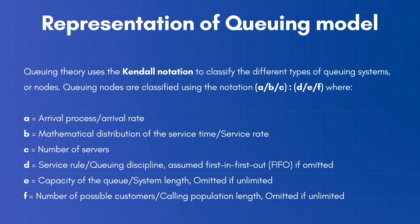Queuing theory uses the Kendall notation to classify the different types of queuing systems or nodes. Queuing nodes or systems are classified using the notation A slash B slash C slash D slash E slash F.